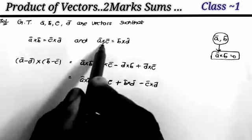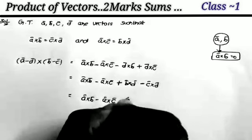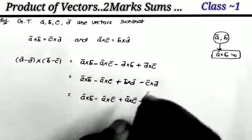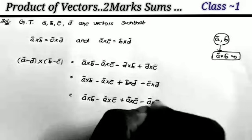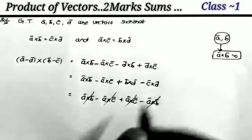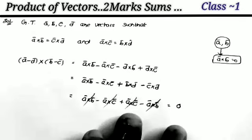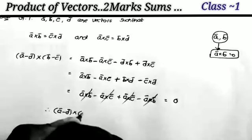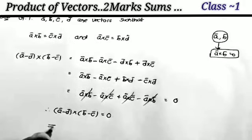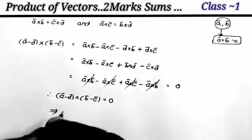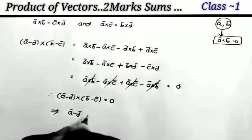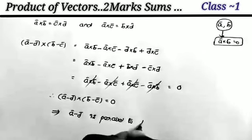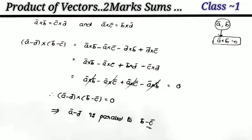From the given conditions, b cross d equals a cross c and c cross d equals a cross b. Substituting: a cross b minus a cross c plus a cross c minus a cross b. All the values cancel, so the result equals zero. Therefore (a minus d) cross (b minus c) equals zero, which means these two vectors are parallel to each other. Therefore (a minus d) is parallel to (b minus c).